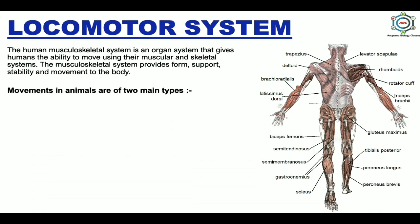Movements in animals are of two main types: non-muscular movements and muscular movements. Non-muscular movements include protoplasmic streaming, pseudopodial movement, flagellar movement, and ciliary movement. Muscular movements are brought about by the sliding of myofilaments past each other in the muscle fibers and are found in the majority of animals.